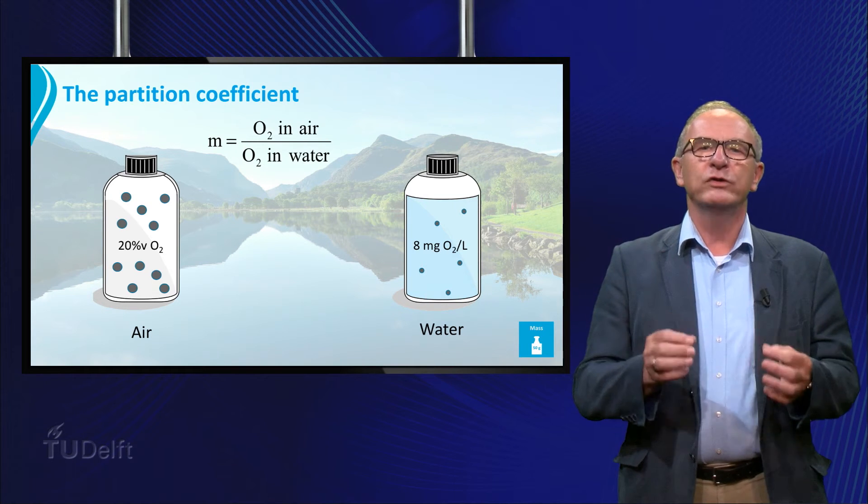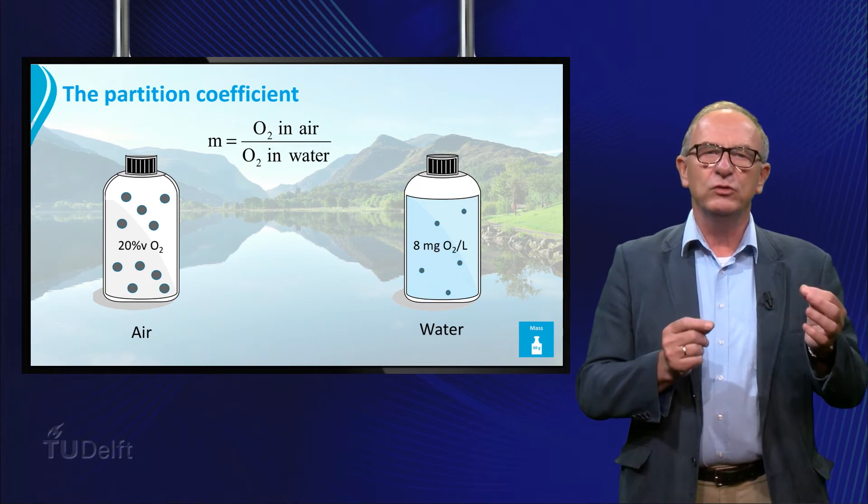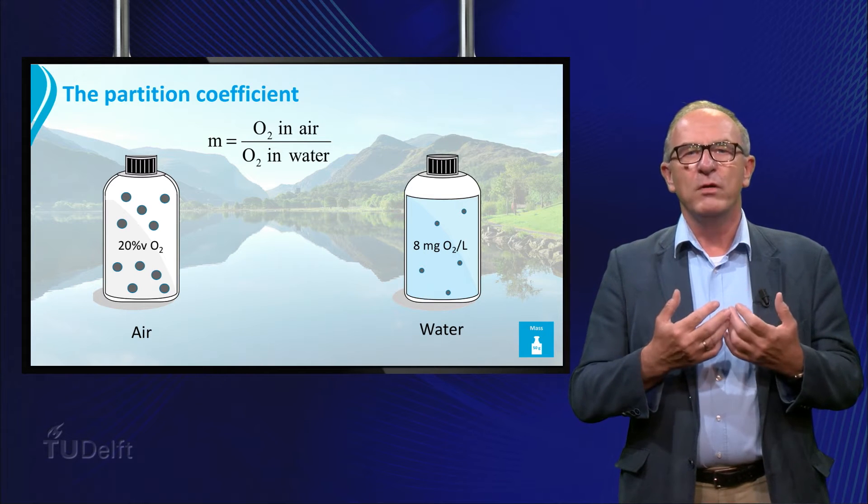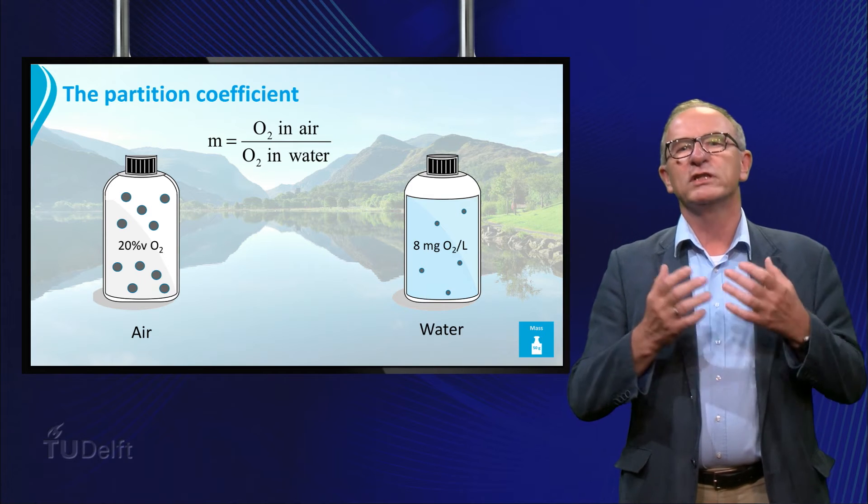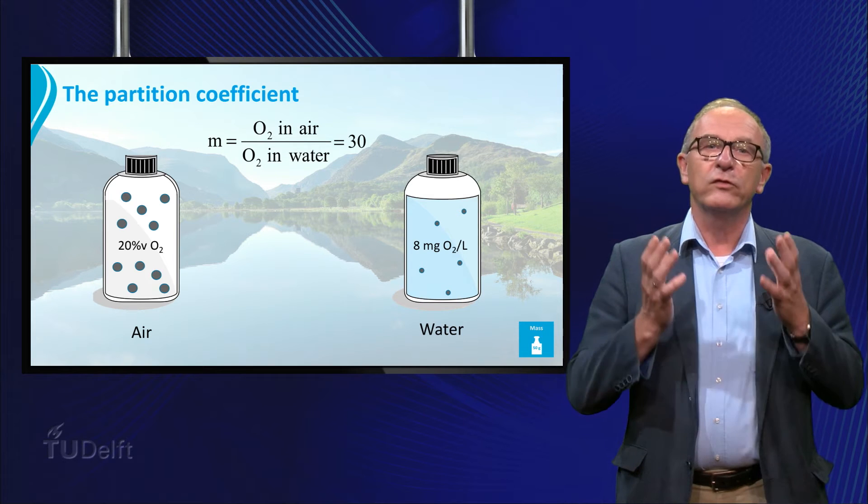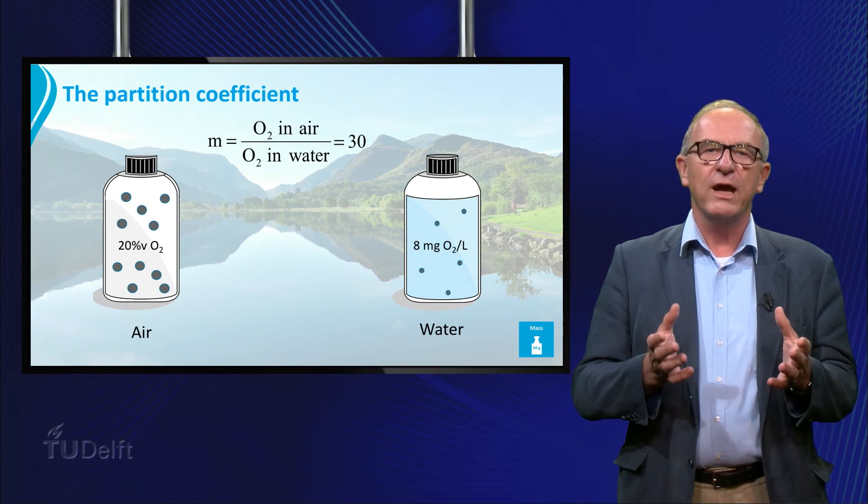It describes how a certain component is distributed over the two phases. In this case the value of m for oxygen in the air and water is about 30. This means that there is 30 times more oxygen in the air than in the water.